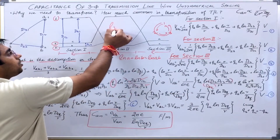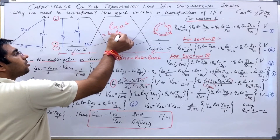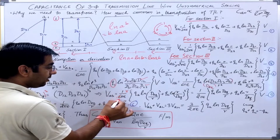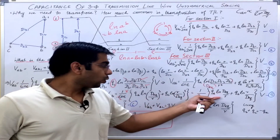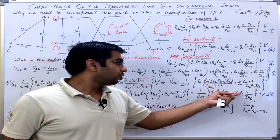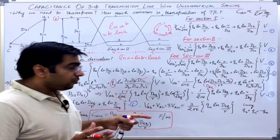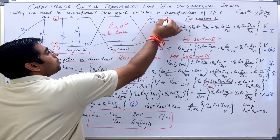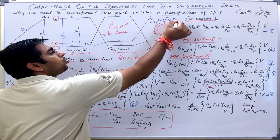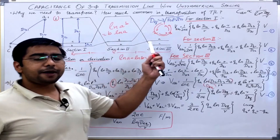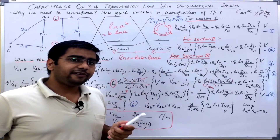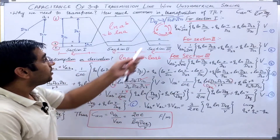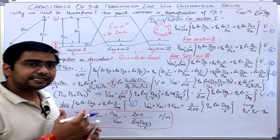Using the property that ln(A^B) = B·ln(A), the power 3 comes out of the logarithm. The factor 3 cancels with the 6 in the denominator, leaving 2. So V_AB = 1/(2πε) · [Q_A·ln(D_eq/R) + Q_B·ln(R/D_eq)]. Note that D_equivalent = ∛(D12·D23·D31) is the same expression obtained when we derived the inductance of an asymmetrically spaced 3-phase transmission line.